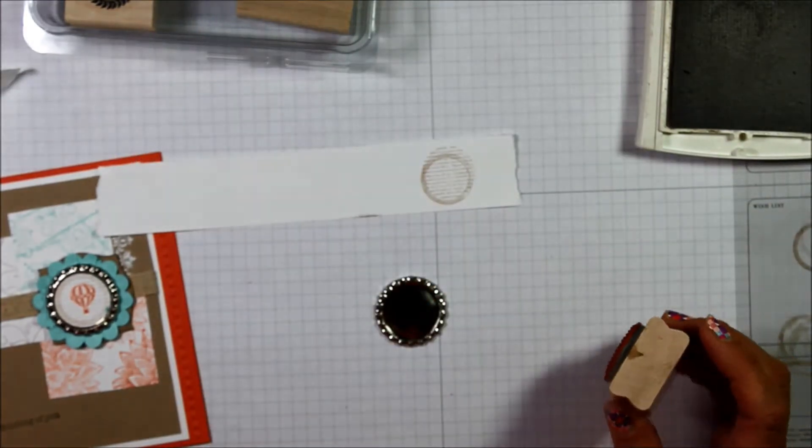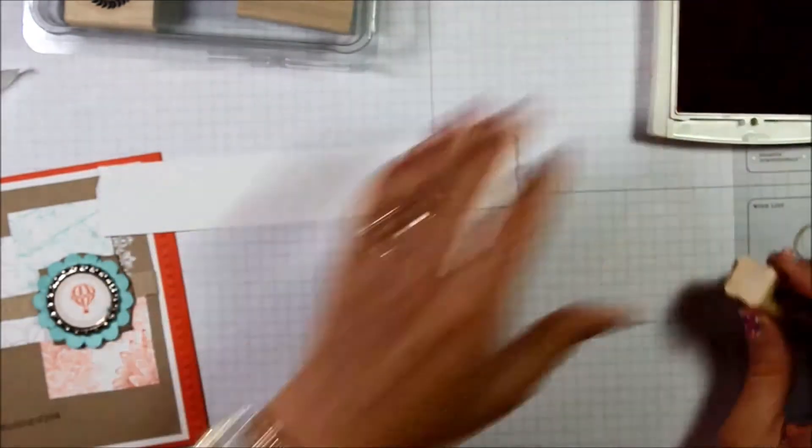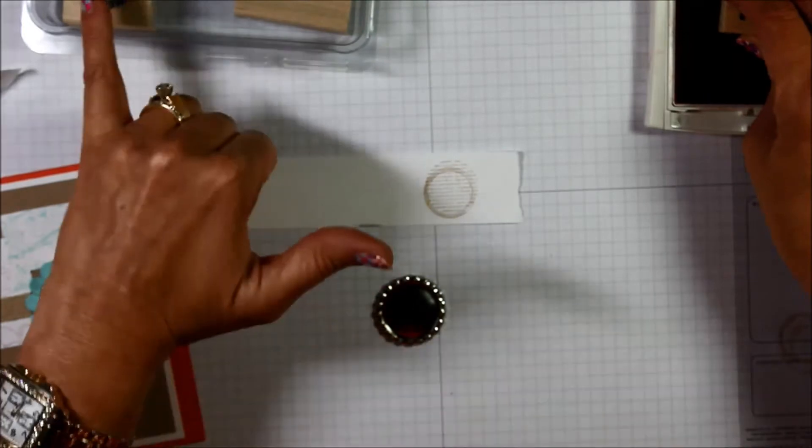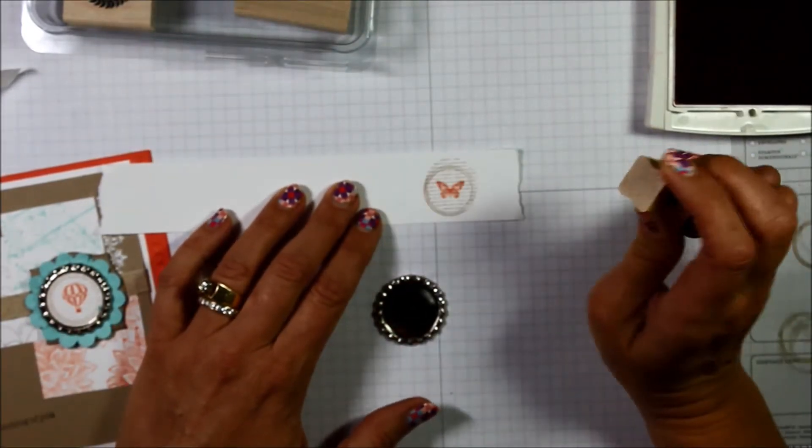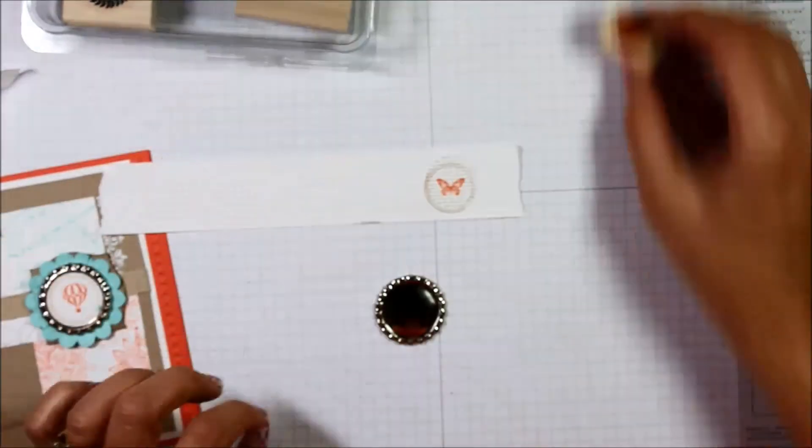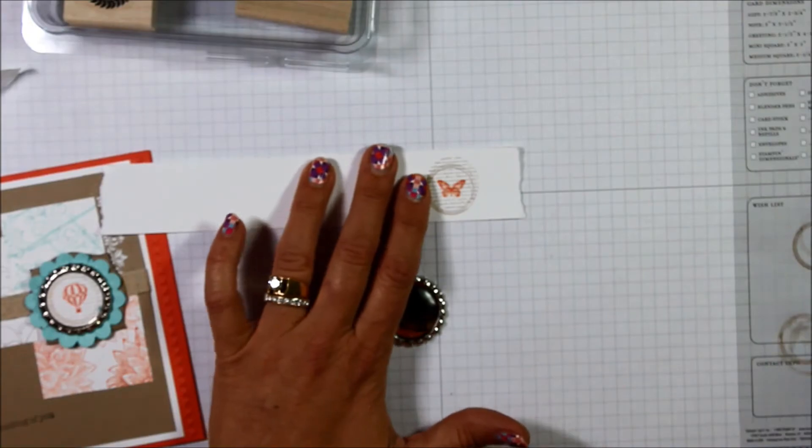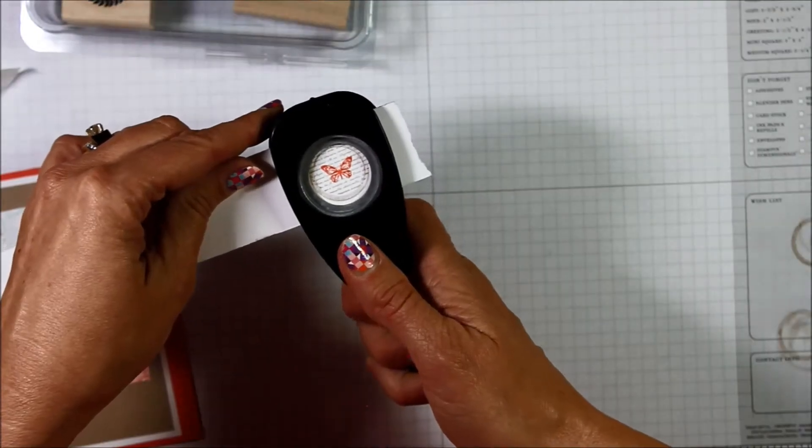I'm not going to worry about getting outside the lines because we're going to punch that out and we're going to just make that go away. I can tell you I think in hindsight I would have bought this set in clear. It would have just been a tad bit easier to line up. But that's just saying. And so now I have this and I'm going to take my one inch circle punch and get that punched out.